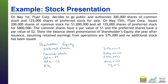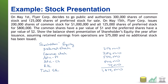Retained earnings from operations are 75,000. After that you would list other items like accumulated other comprehensive income or treasury stock as a subtraction, but we don't have any here. Tallying everything up, total shareholders' equity comes to 1.875 million dollars. If we had liability information, we'd add a total liabilities plus shareholders' equity line, but this is how you present your stock in the shareholders' equity section of the balance sheet.